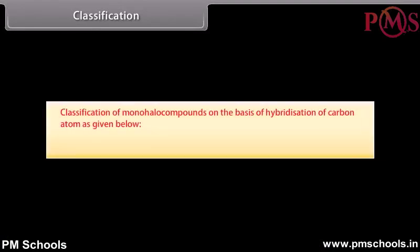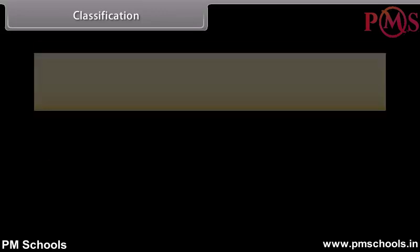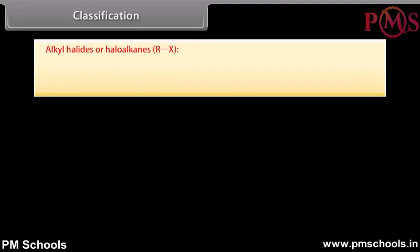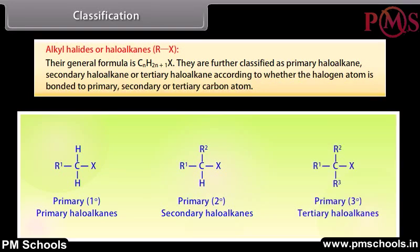Classification of mono-halo compounds is on the basis of hybridization of the carbon atom. Halogen compounds in which halogen is bonded to sp3 hybridized carbon include alkyl halides or haloalkanes with general formula CnH2n+1X. They are further classified as primary, secondary, or tertiary haloalkane according to whether the halogen atom is bonded to a primary, secondary, or tertiary carbon atom.